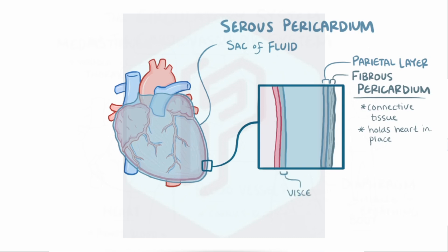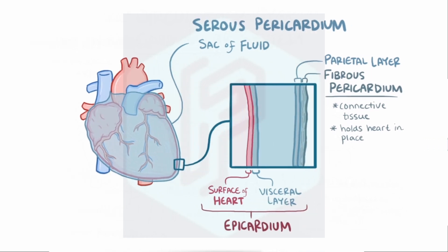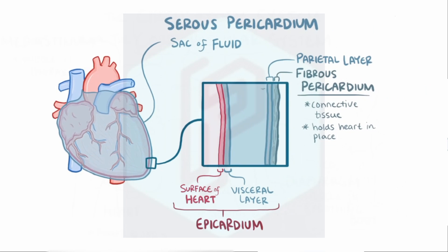The inner layer is called the visceral layer, and it gets stuck tightly to the heart itself, forming the epicardium, or the outer layer of the heart. The cells of the serous pericardium, both the parietal and visceral layer, secrete a protein-rich fluid that fills the space between those layers and serves as a lubricant for the heart, allowing it to move around a bit with each heartbeat without feeling too much friction.